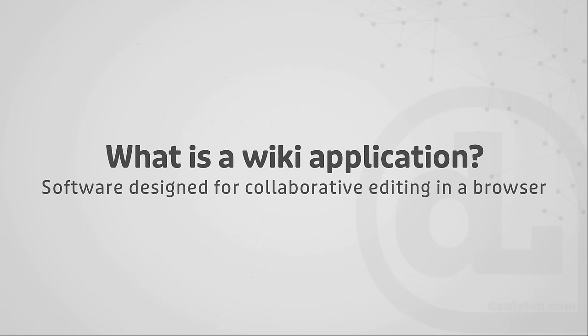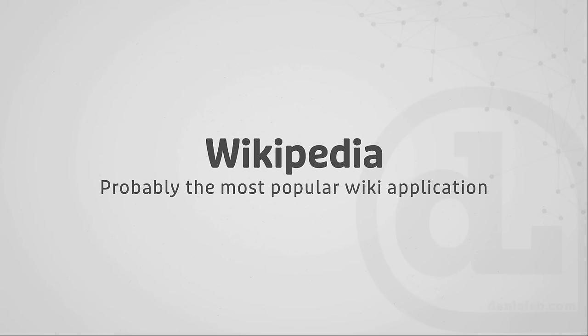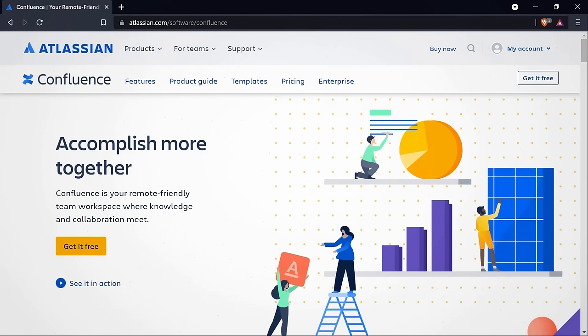The name wiki might bring to mind the world's most popular wiki application, Wikipedia. Wikipedia may be the most popular, but that doesn't mean it is the only wiki application out there. Its name simply combines encyclopedia with wiki application. Confluence is not associated with Wikipedia other than having similar technology that allows users to edit collaboratively using only the web browser. Confluence is developed by a company called Atlassian, which is the same company behind the extremely popular agile project management and issue tracking tool, Jira.